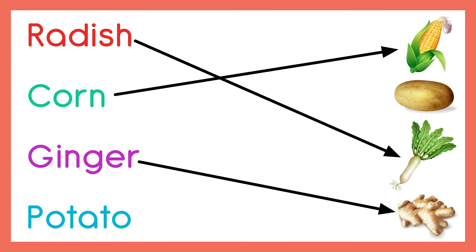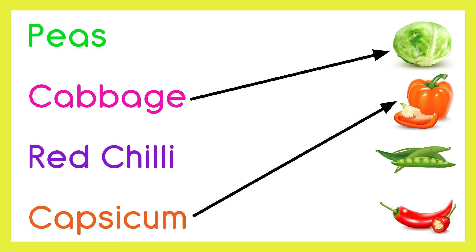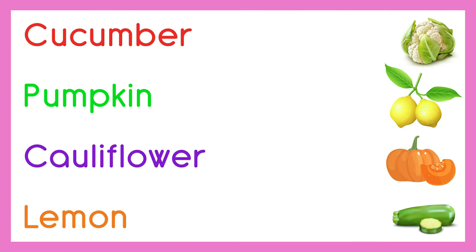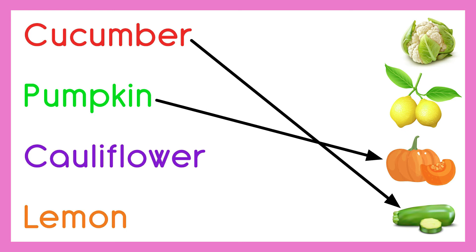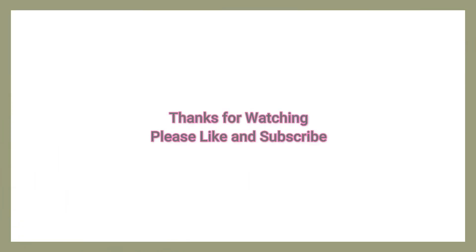Ginger, Potato, Cabbage, Capsicum, Peas, Red Chili, Cucumber, Pumpkin, Cauliflower, Lemon, Capsicum.